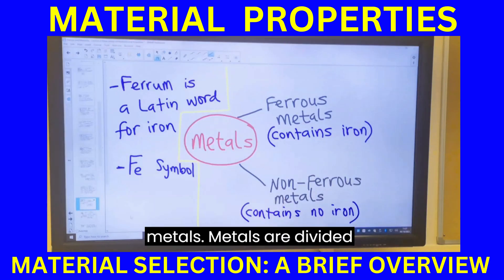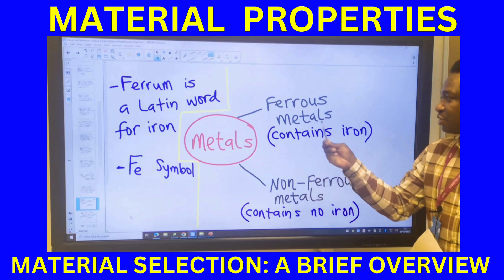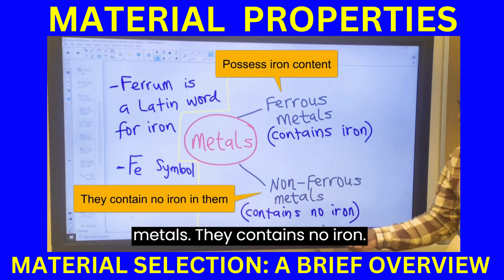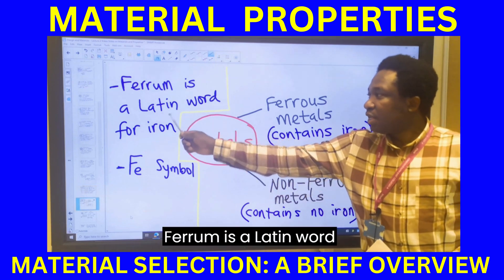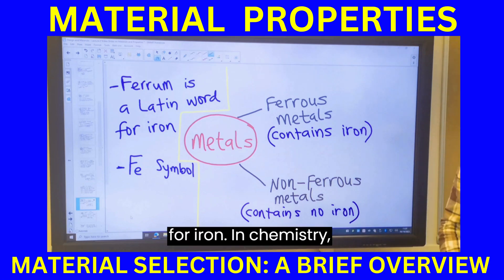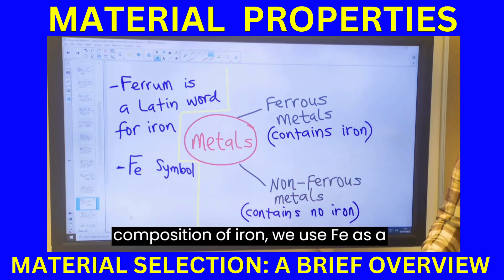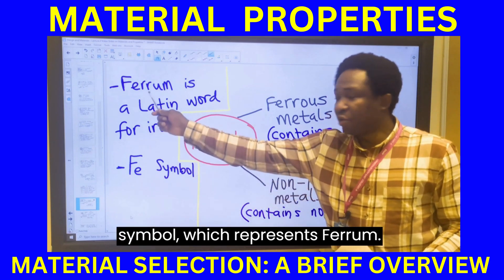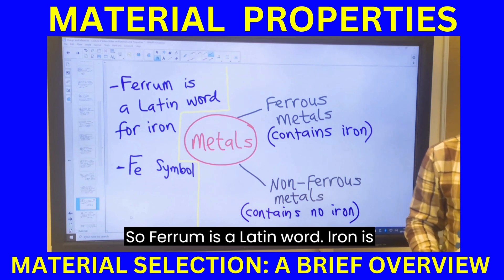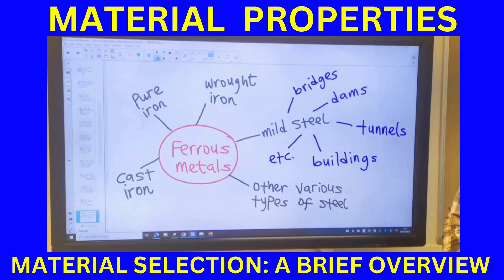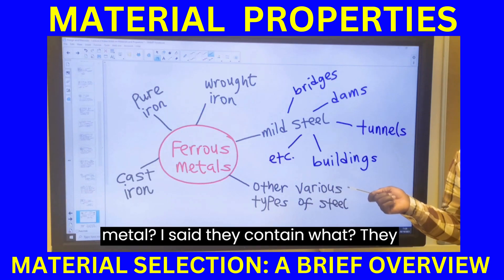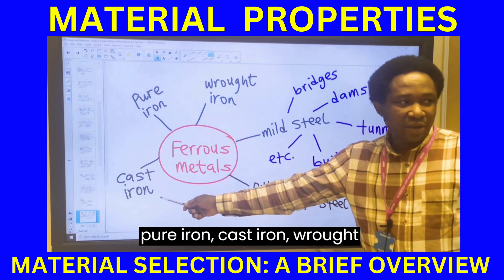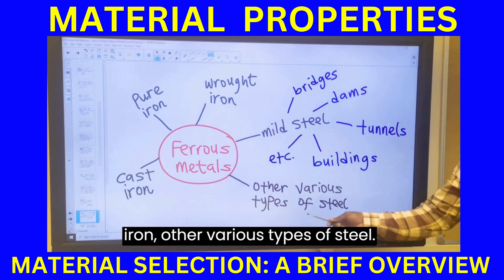Ferrum is a Latin word for iron; in chemistry, the chemical symbol for iron is Fe, which represents ferrum. Ferrous metals include pure iron, cast iron, wrought iron, and various types of steel. Mild steel can be used for bridges, dams, tunnels, buildings, and different construction projects.